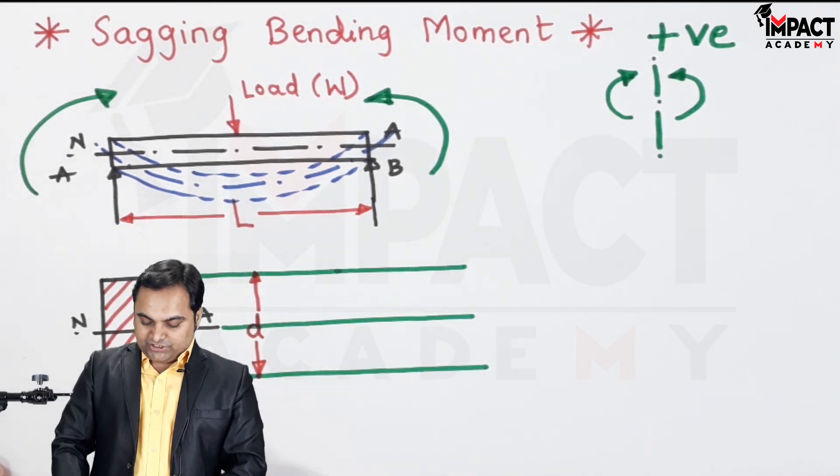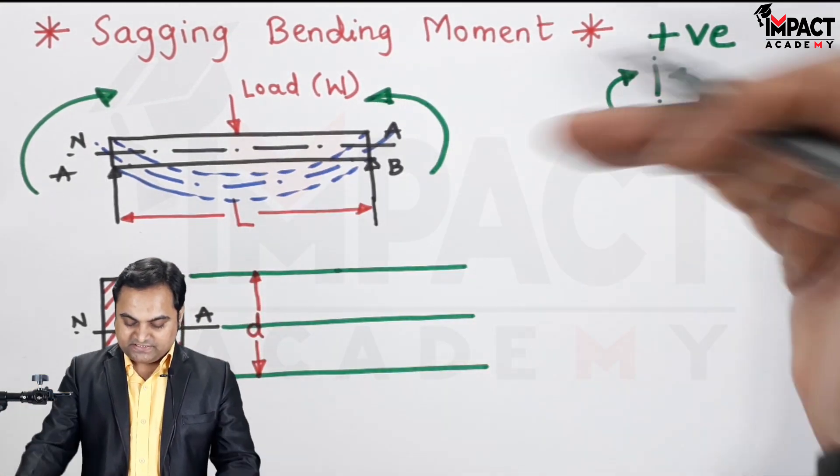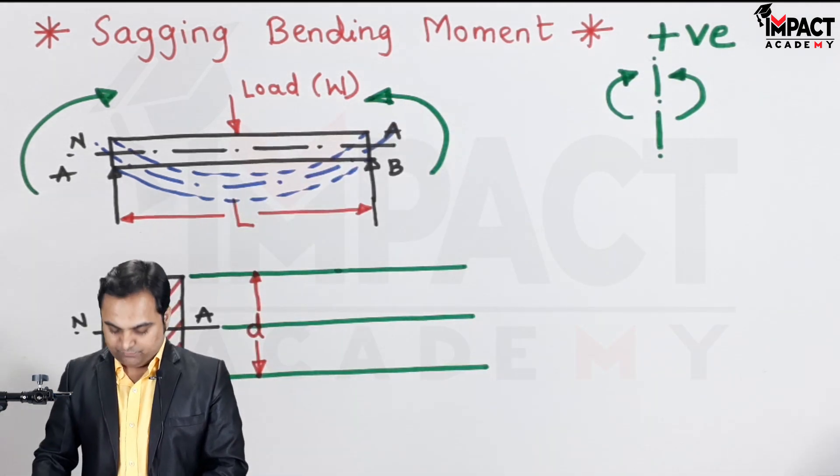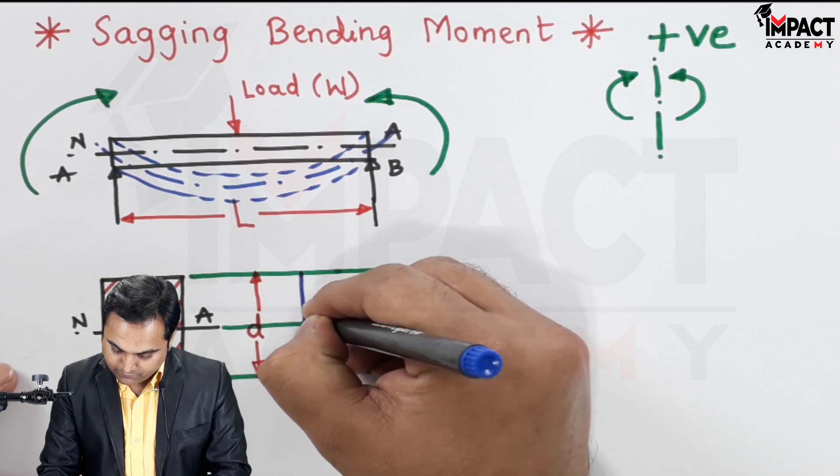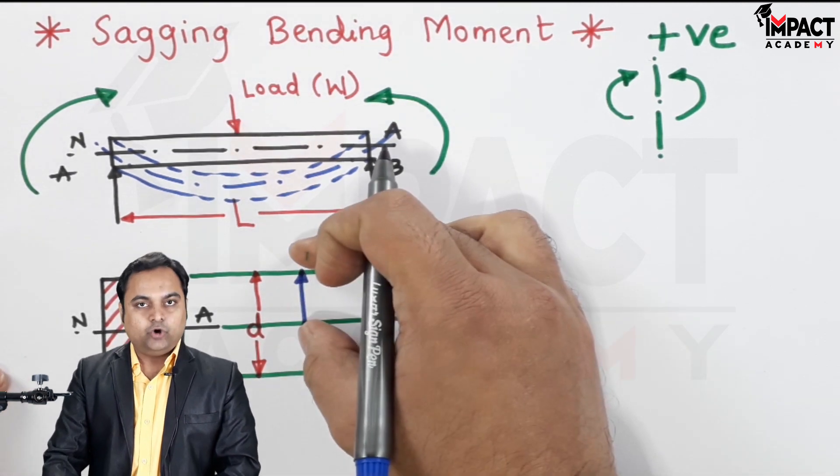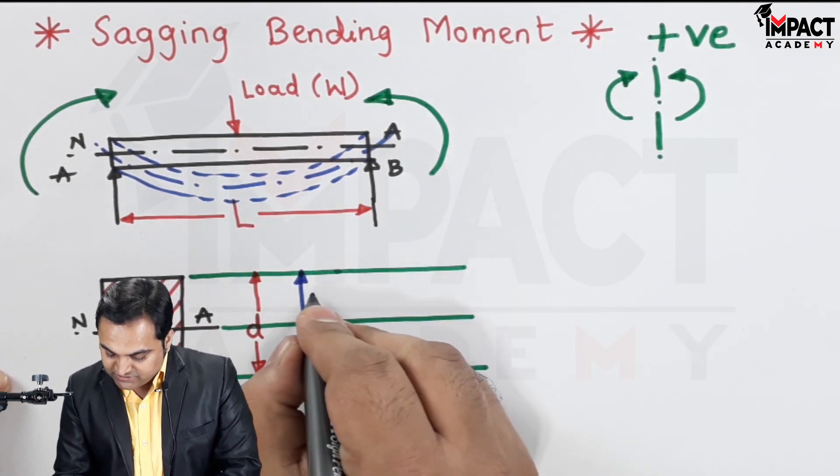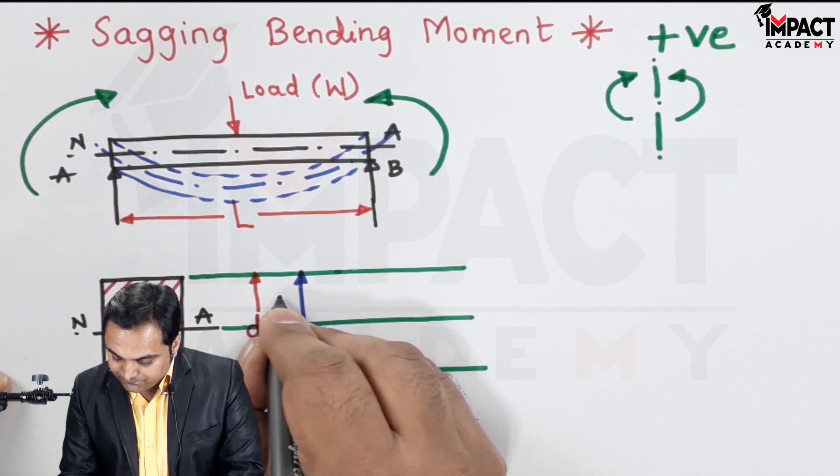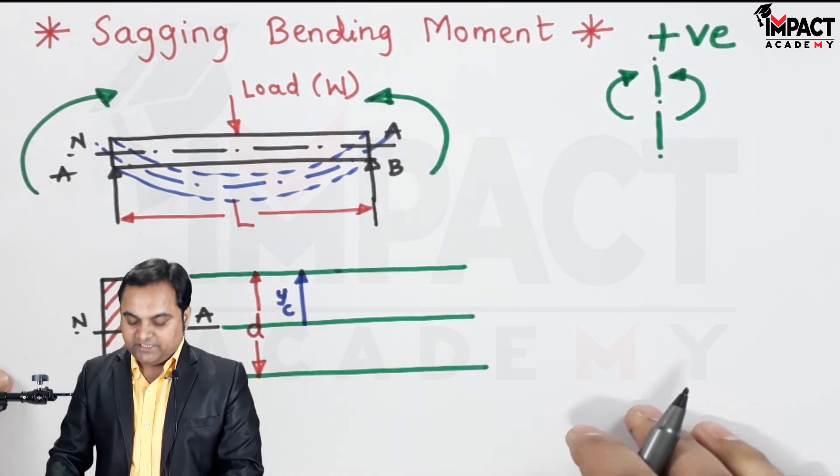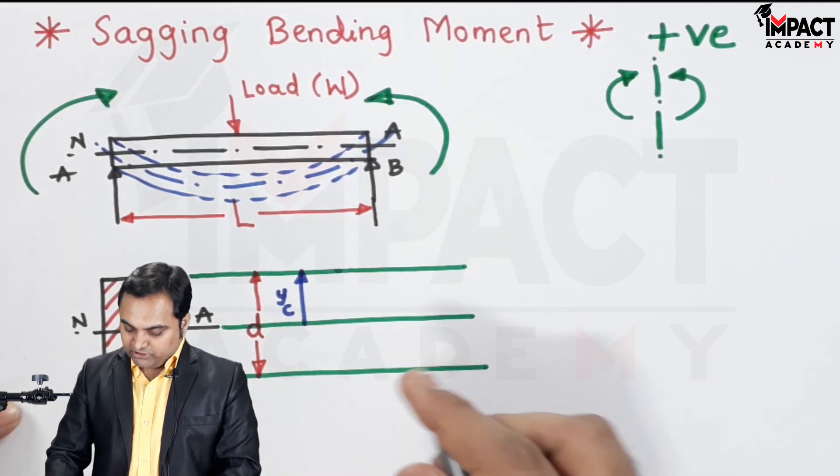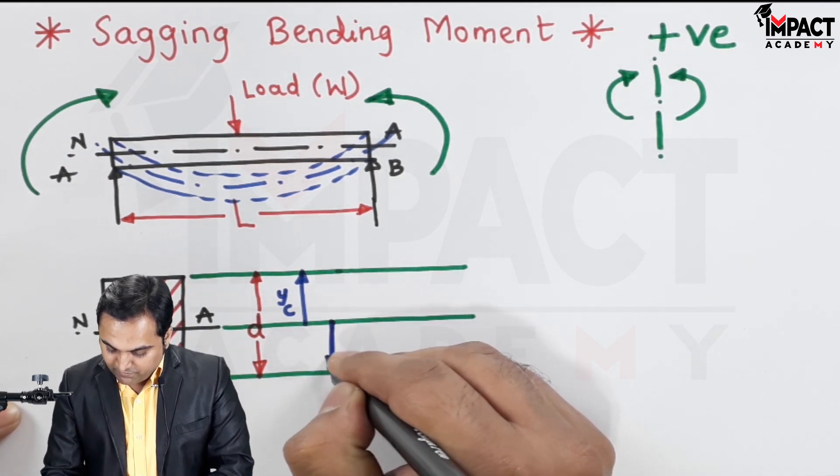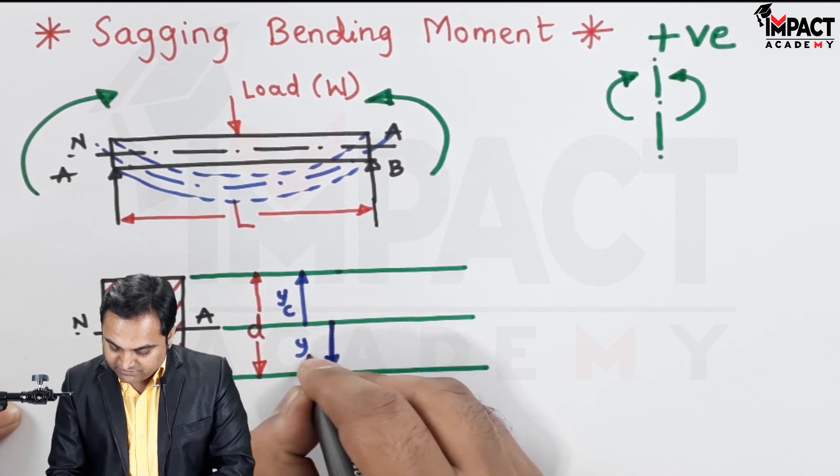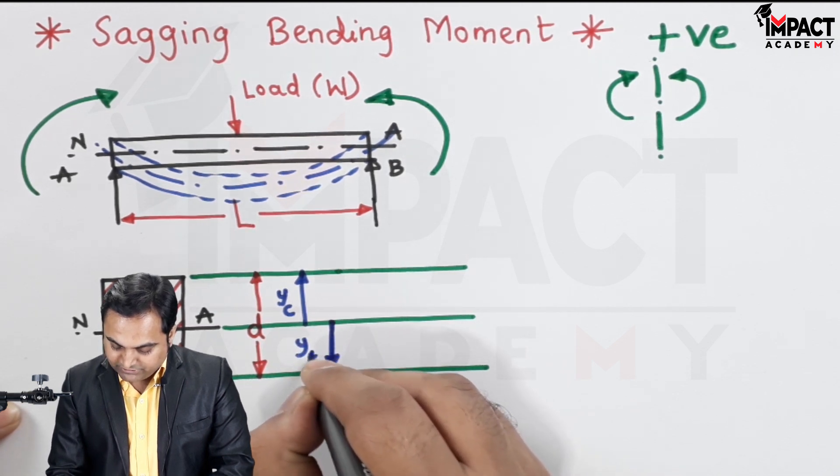So here I have taken a rectangular cross section. And as we can see, when it is sagging, the top layers are getting compressed. So from the neutral axis up to the top, this height or depth would be denoted as y suffix c, that is the depth in compression. And similarly, from the neutral axis up to the bottom, it would be y suffix t, that is the depth under tension.